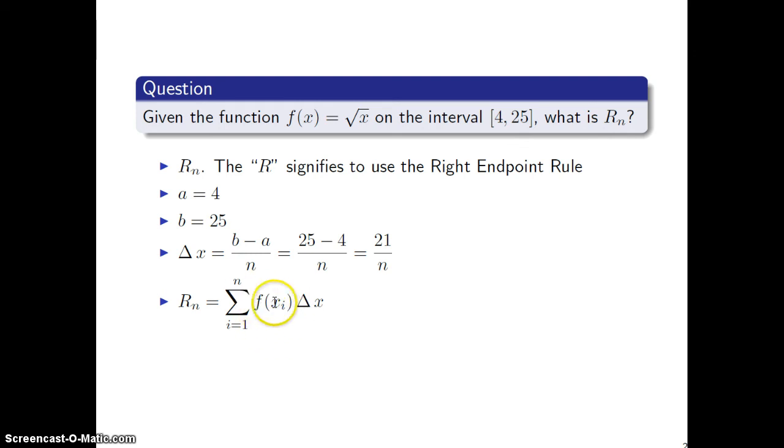Now just plug in. For f(x_i), all I'm going to do is copy the sum, but for f(x_i), f is square root, so you have square root of x_i, and then for delta x we'll just replace it with 21 over n. So you get something like that, and that's it.